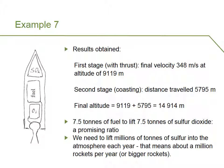These are the results obtained from the calculation. After the first stage, the rocket reaches a final velocity of 348 metres per second and an altitude of 9,119 metres. The second stage of the flight enables the rocket to travel a further 5,795 metres, reaching a final altitude of 14,914 metres. That is a stratospheric height, as the stratosphere begins at roughly 10 to 15 kilometres. The actual height where it starts depends on location — the troposphere is thicker towards the equator — but 15 kilometres is into the stratosphere.